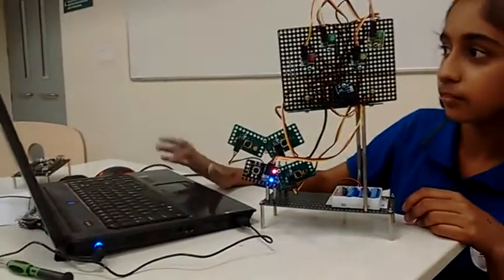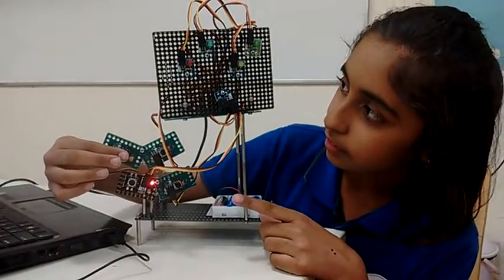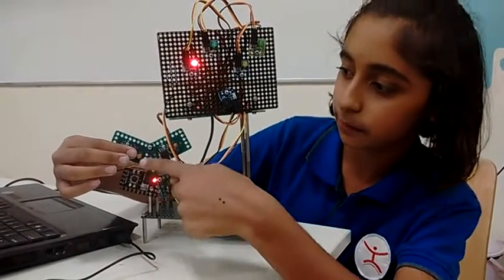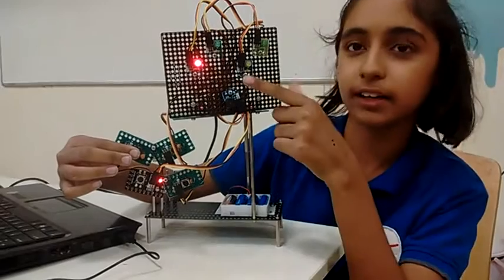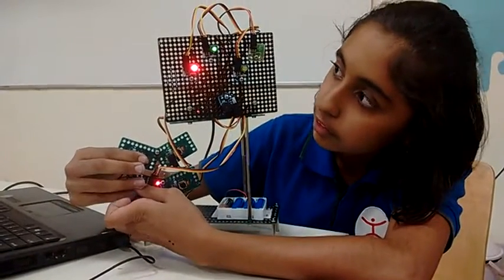So if I run it, now I'm pressing one contact sensor and one LED is glowing. If I press 2 contact sensors, 2 LEDs will glow.